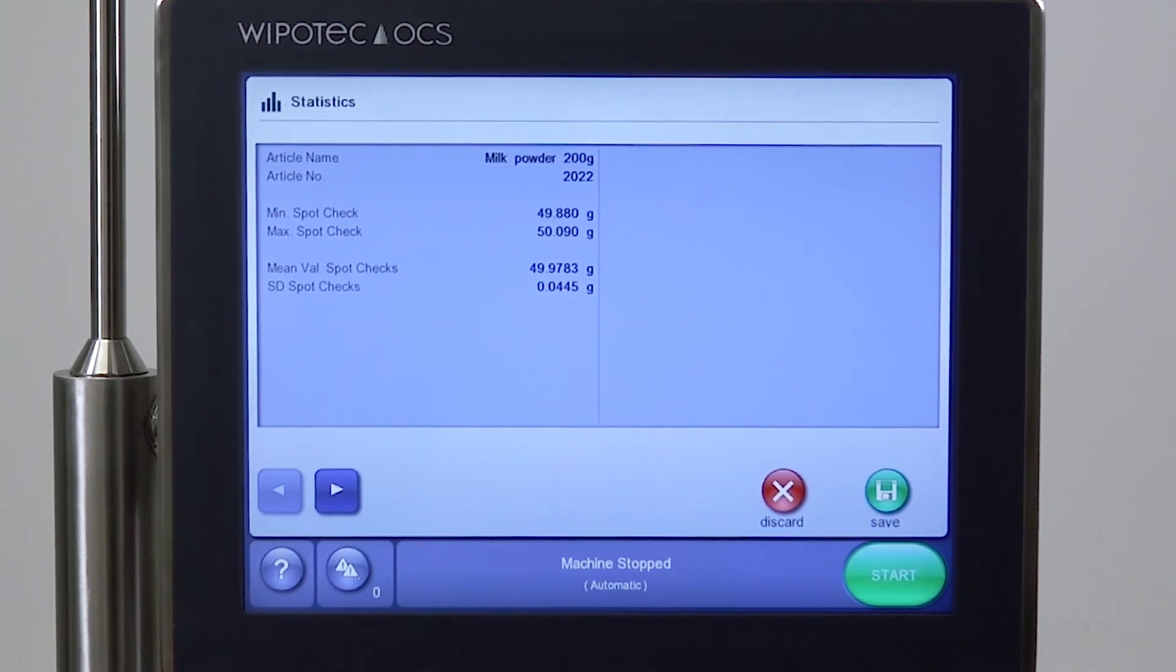We finish the spot check at that position. We can see that the precision of the checkweigher and its uncertainty is 44.5 milligrams and that the average weight reading after 30 readings is 49.9783 grams. From my point of view, this is a very precise dynamic checkweigher.